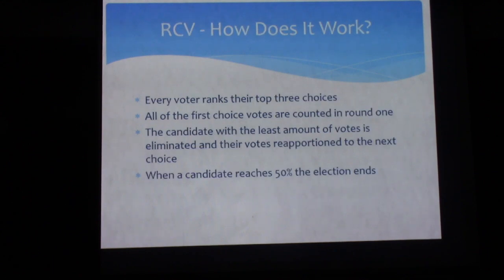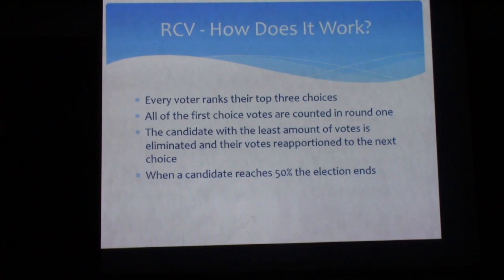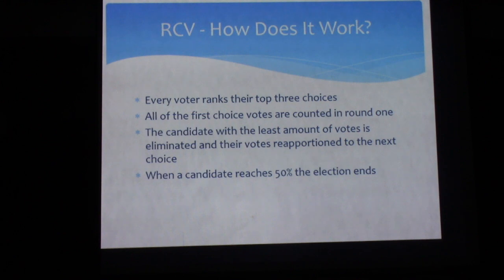So how does Ranked Choice Voting work? This is for three or more candidates in a given election. Every voter would get a ballot with three columns. For every candidate, you would pick one — the first column would be your first choice, the second column your second choice, the third column your third choice. In the first round of counting, everybody's first choice would be counted. If after that first round somebody has reached the 50% threshold, the election is over and the winner is found. If not, then the candidate with the least amount of votes would have their votes moved to those voters' second choice, and those votes would be distributed to the next choice.